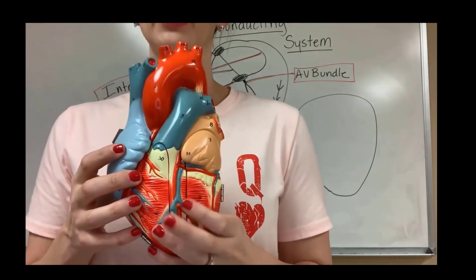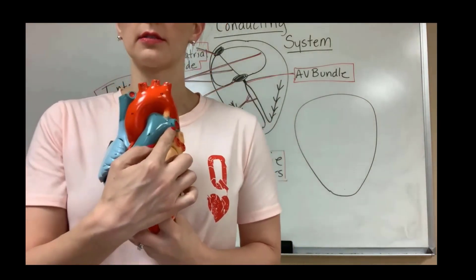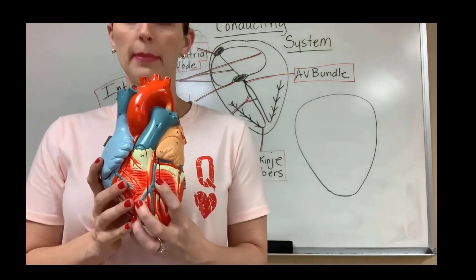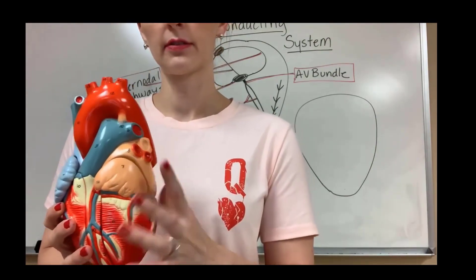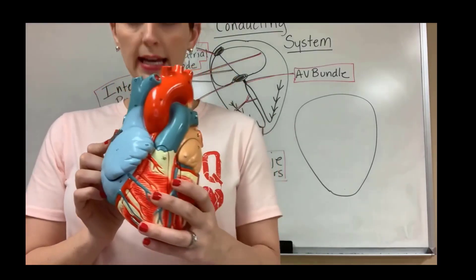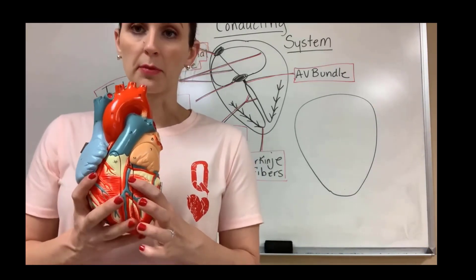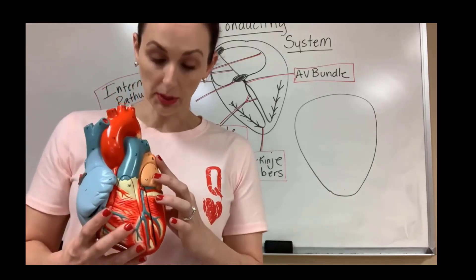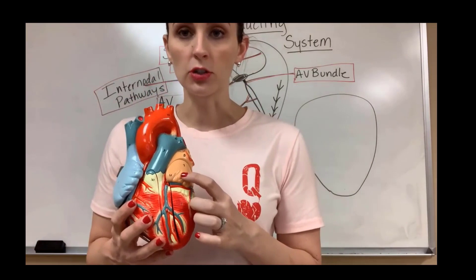These pulmonary arteries take the deoxygenated blood out of the right side of the heart and carry it to the lungs. We circulate through the lungs and then return to the heart through the left and right pulmonary veins. Because we just came from the lungs, this brings oxygenated blood back to the left atrium.